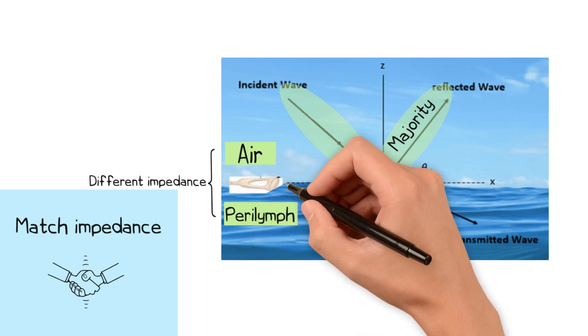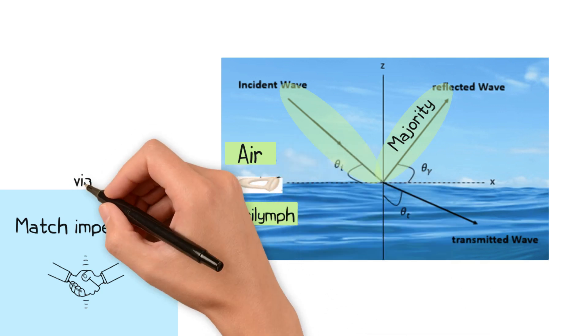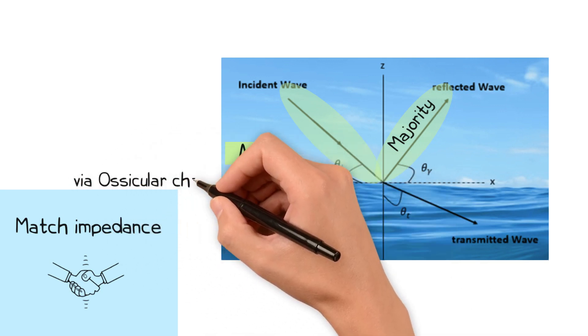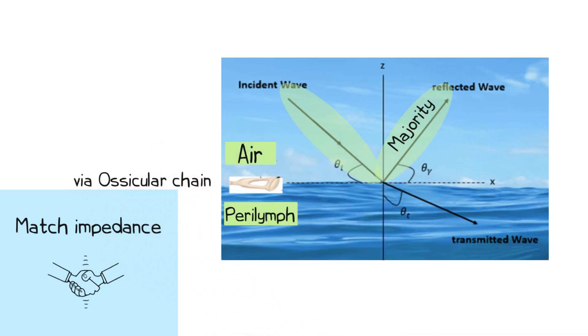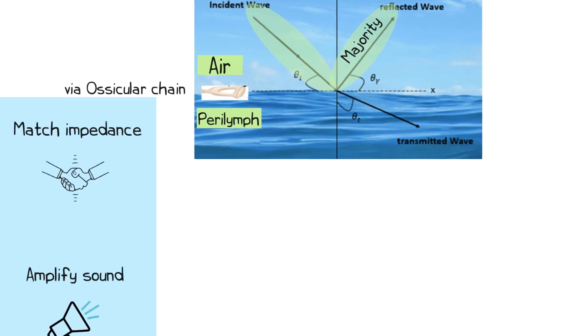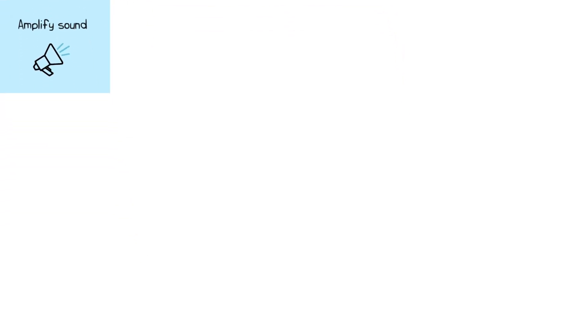The ossicular chain serves to match the impedances between the air and the perilymph of the inner ear. In addition, the middle ear also amplifies the sound pressure that is admitted to the inner ear through three mechanisms.